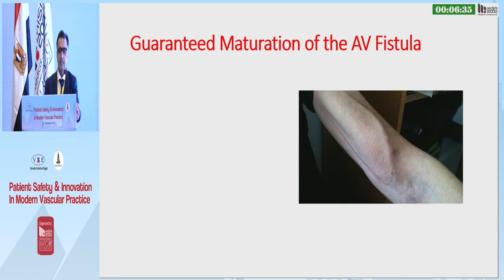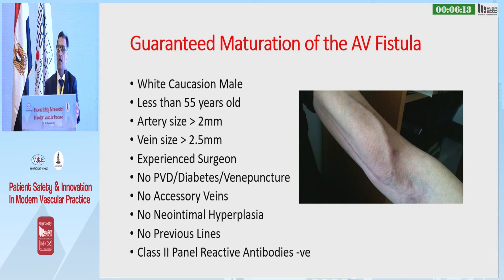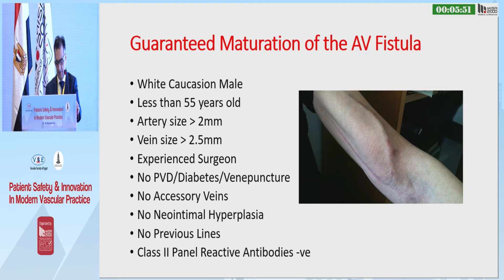If the next slide could guarantee you a mature fistula, that would be the end of my talk. However, this is what you have to have: you have to be a white Caucasian male, quite young, artery size greater than 2 mm, vein size 2.5 mm or greater, an experienced surgeon, no chronic diseases, no repetitive venipuncture in the vein you're going to use, no accessory veins stealing blood from your fistula, no neo-intimal hyperplasia, no previous lines, and you need to be negative for panel reactive antibodies.